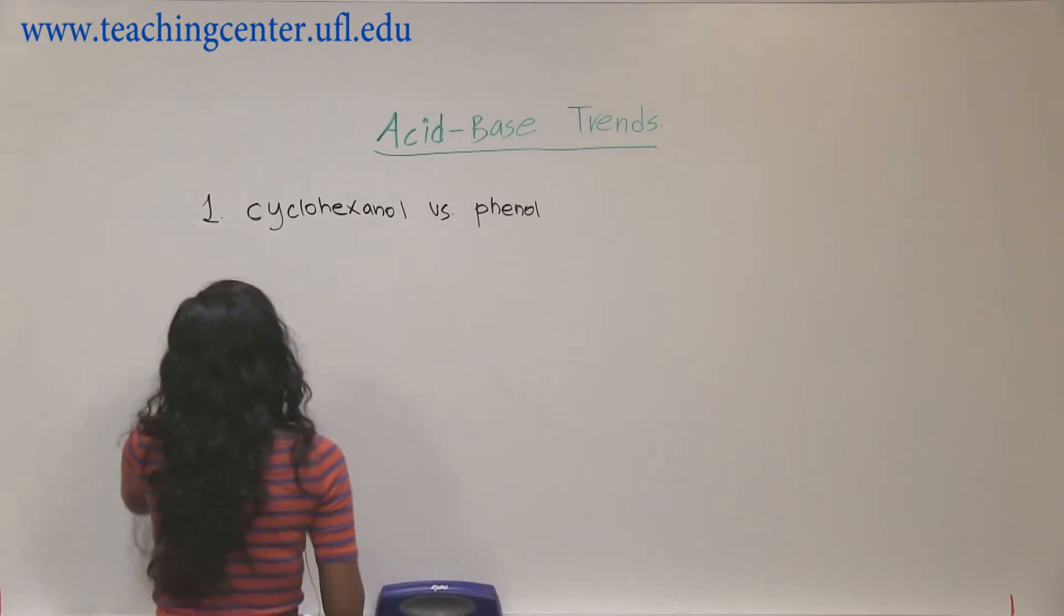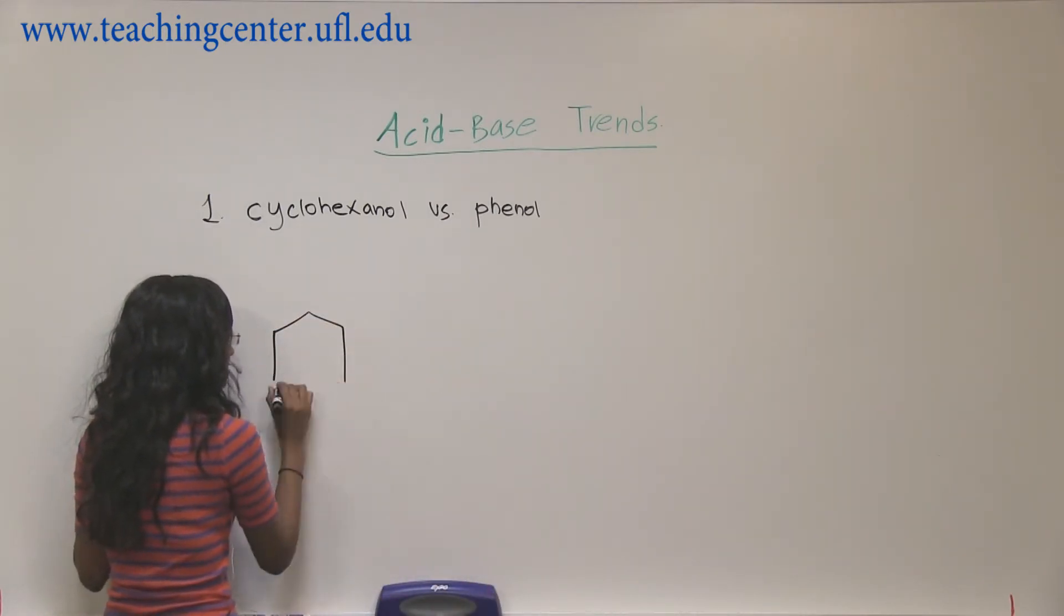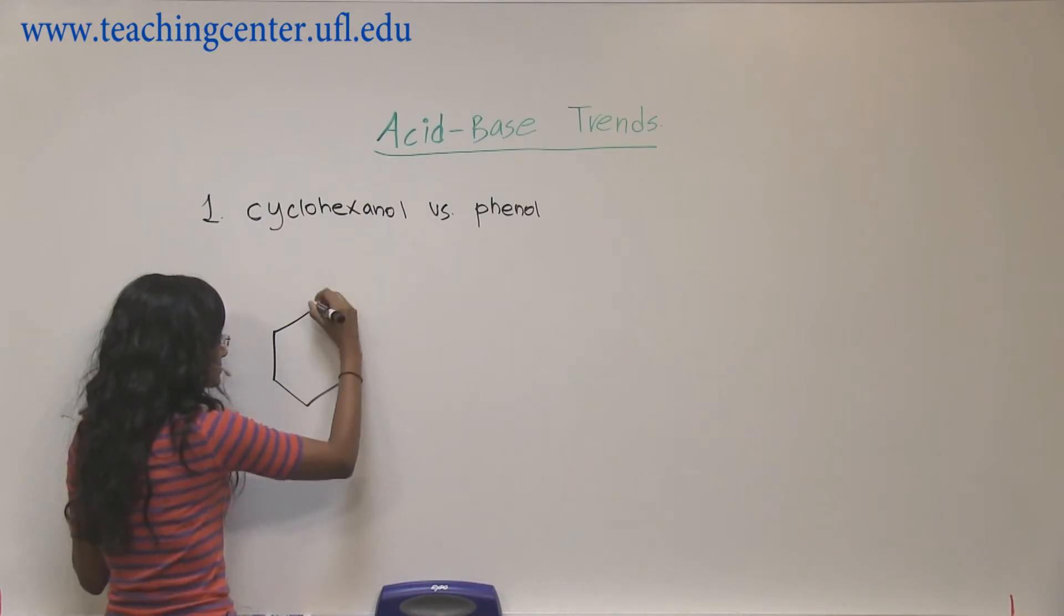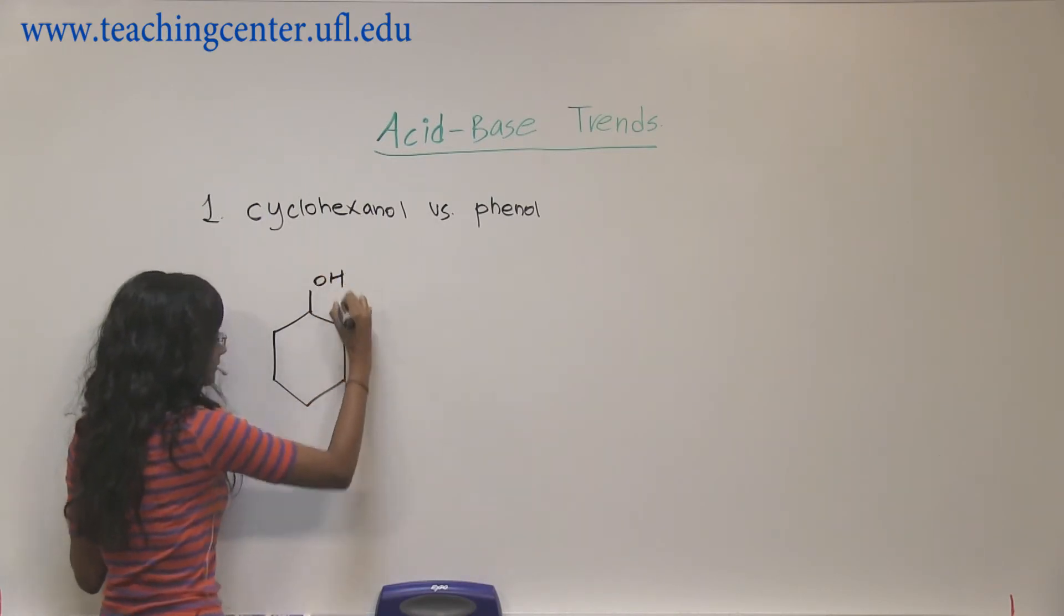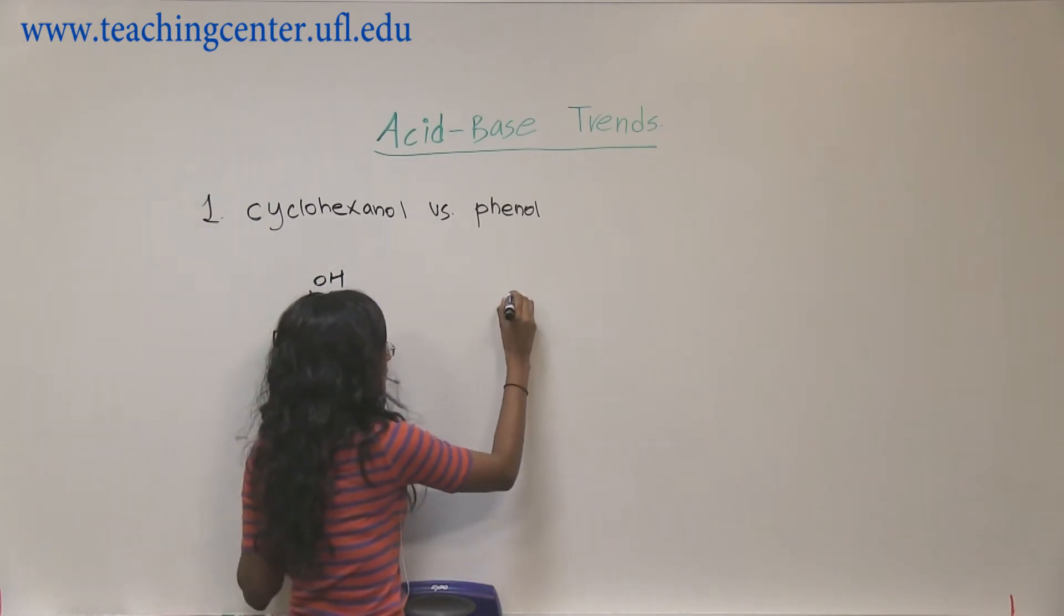So this is your IUPAC name, cyclohexenol. It's a six-member ring. OL means that you have an alcohol on there. So this is cyclohexenol.